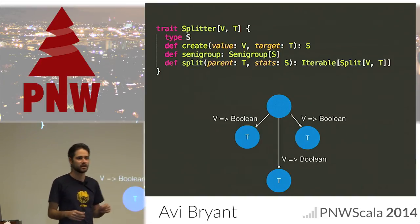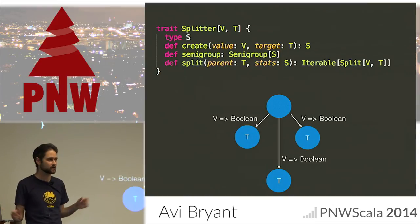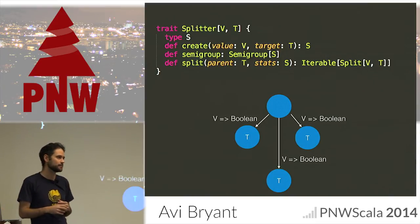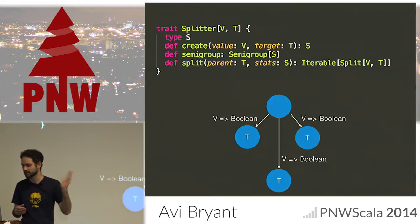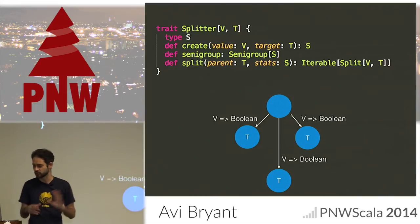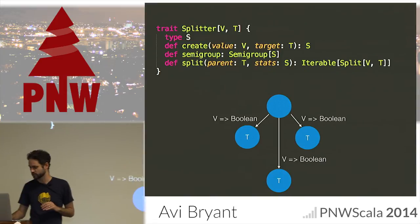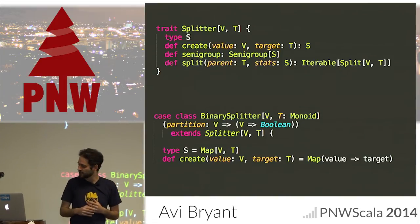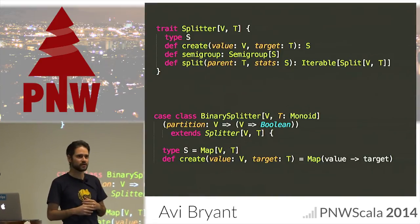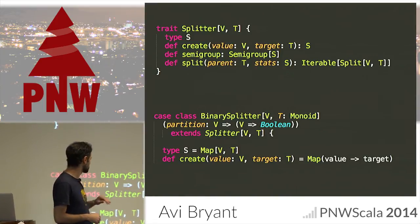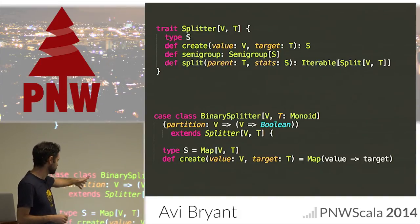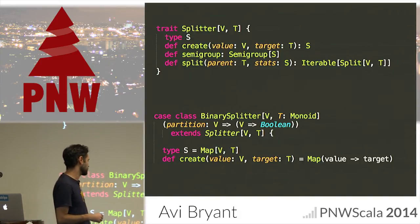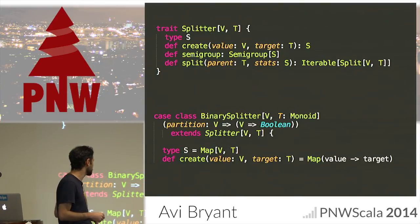It's worth pointing out that there's nothing enforcing that there be two paths — we can have a multi-way split if you write your splitter that way. The splitters currently included in Brushfire are all binary trees, but there's no particular restriction on that. The particular binary splitter has as type S just this map from V to T, and its create is very simple — it just creates a map.